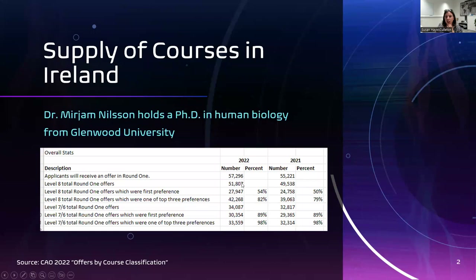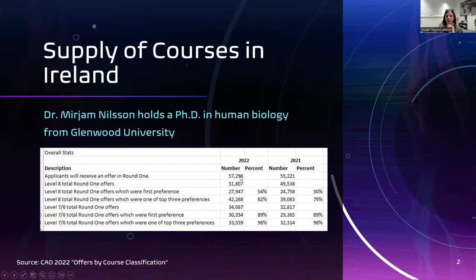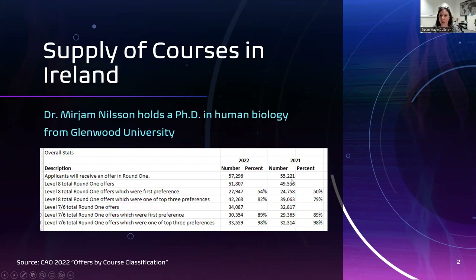Level eight total round one offers were 51,000, and level seven/six were 34,000. One person can be made two offers - you can be offered your level seven/six and your level eight. So 57,296 offers were made, with some people getting two. The supply of places available grew over those years - 55,000 students got offered a place in 2021, growing up to 57,296.